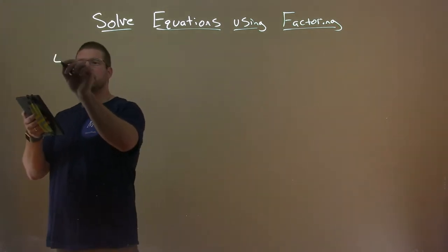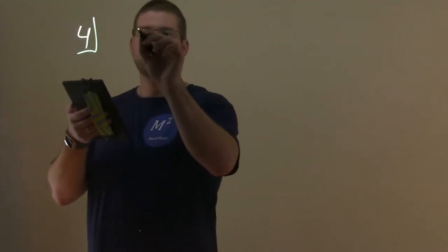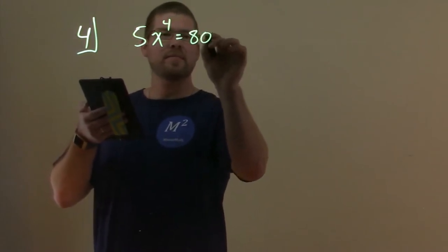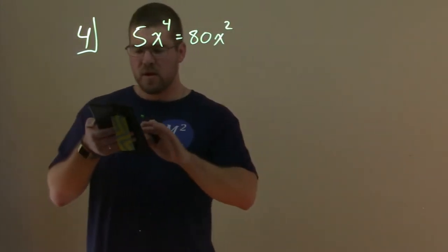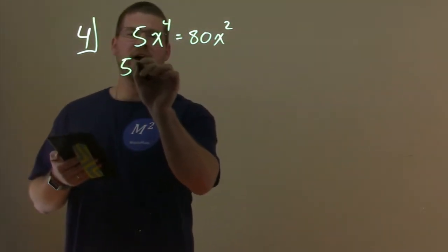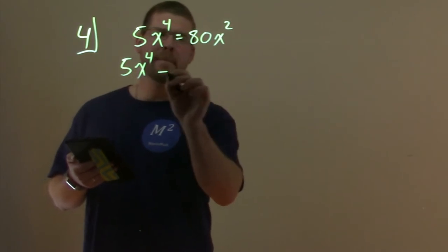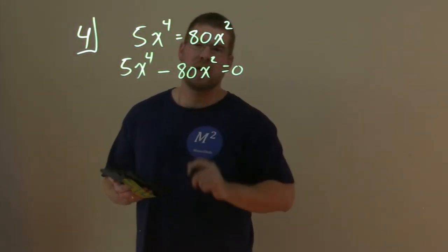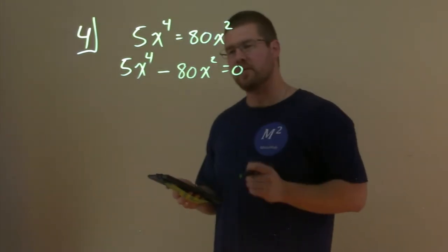Alright, so number 4. We're given 5x^4 = 80x^2. So the first thing I want to do is get this 80x to the left hand side, so we have 5x^4 - 80x^2 = 0. So I subtracted the 80x^2 to both sides.